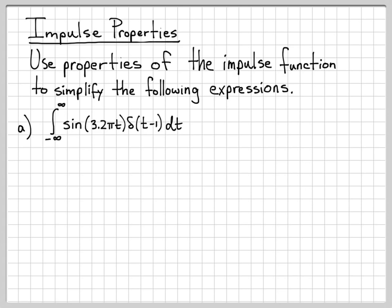So when confronted with an integral like this, the first thing to note, most importantly, is where is the impulse located? This impulse is located at time t equals 1, because that's when this argument goes to 0. When t is 1, 1 minus 1 is 0.